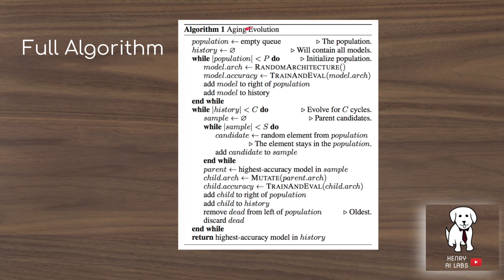This is the full algorithm. The population is initialized, and the history tracking model ages is defined as a set. Models are trained and evaluated, then some models are sampled — whichever has the best fitness is passed on. The child architecture is mutated, trained, and added to the population, while the population members that have been in the population the longest are removed.